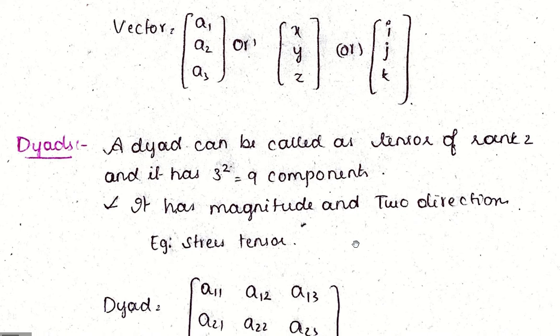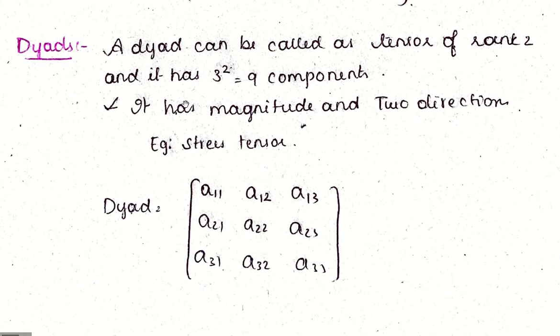A dyad - this is the tensor. When we say tensor in general, that is a second order tensor, also known as dyad. A dyad can be called a tensor of rank 2, and it has 3^2 components. Whatever the rank is, that power of 3 will be the number of components. So rank 2 tensors have 3^2 components, that